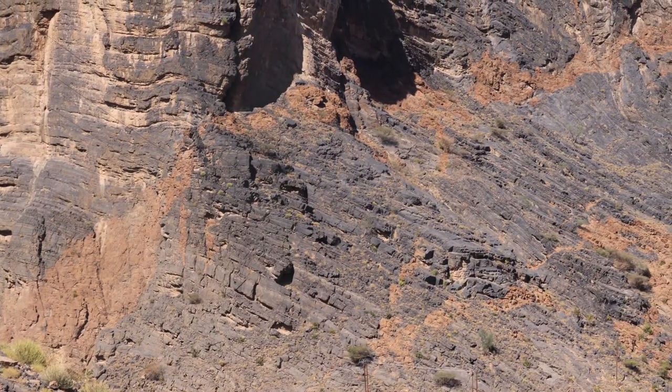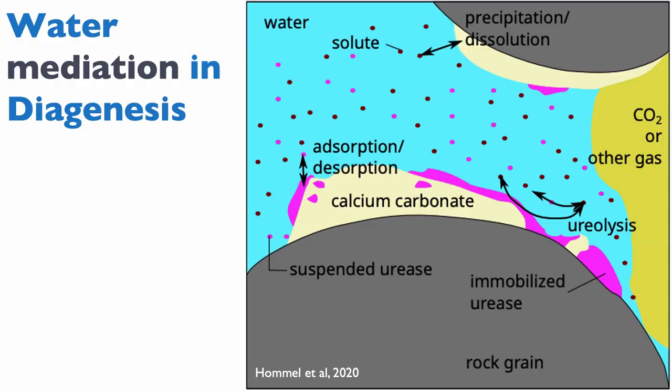The gorge was formed by water, and one of the themes we're going to discuss in this class is precisely water-rock ratio and the importance of water and saturation in driving diagenetic reactions in carbonates. Looking at this diagram from Hommel and I, published in 2020, the key message is that the pore space in carbonate rock contains water and ions, and what really matters for us in diagenesis is the process of precipitation and dissolution.